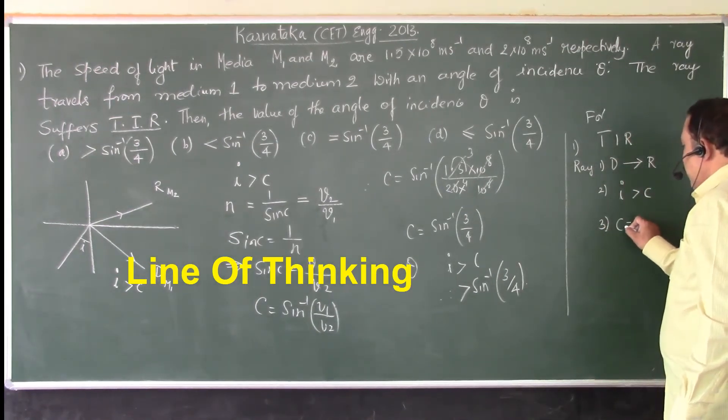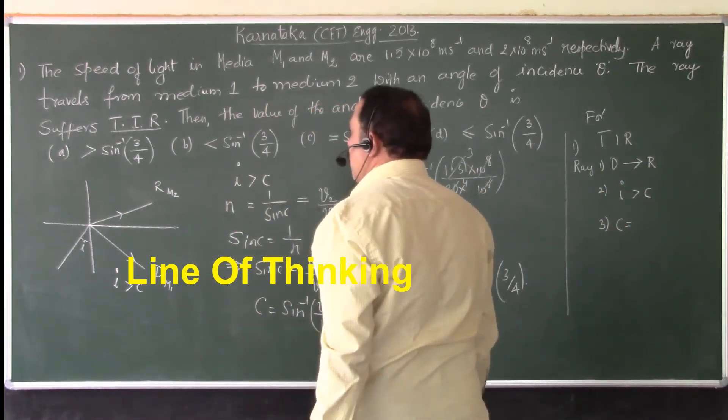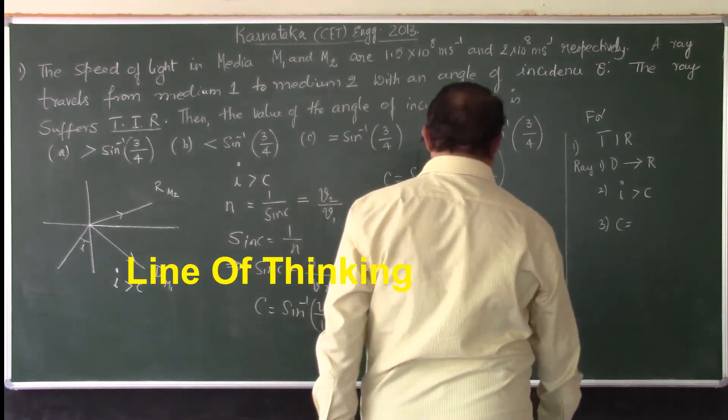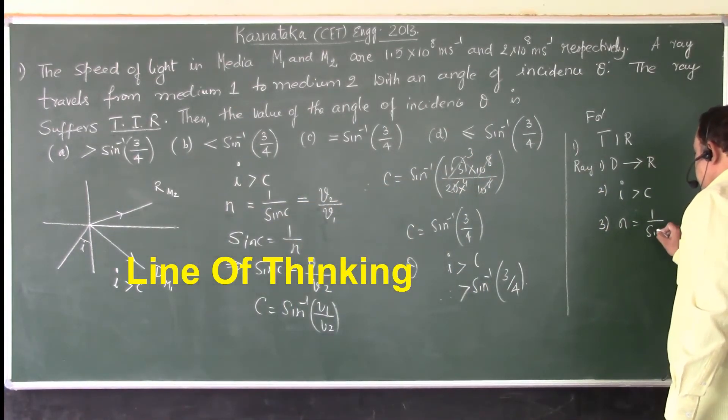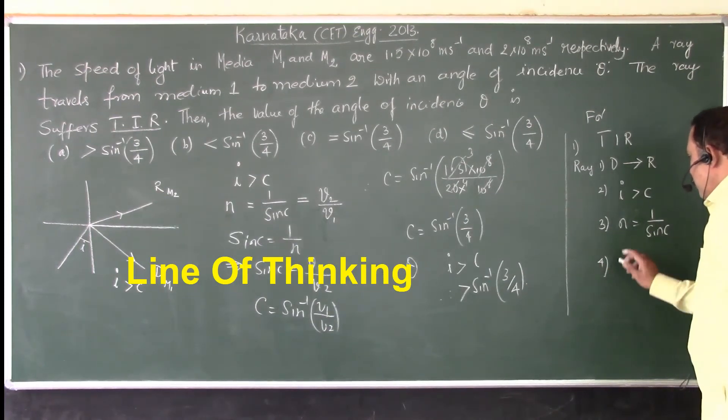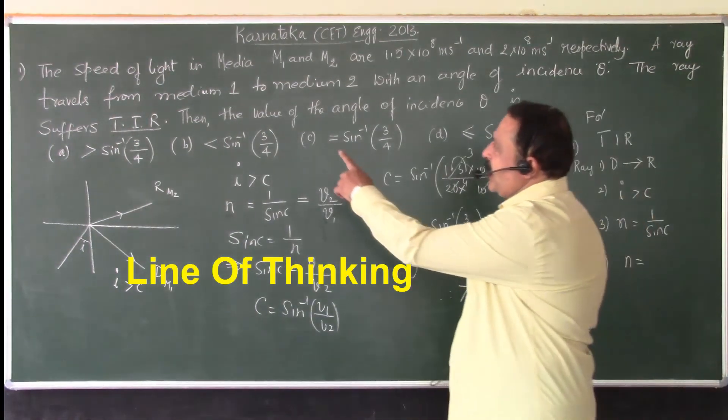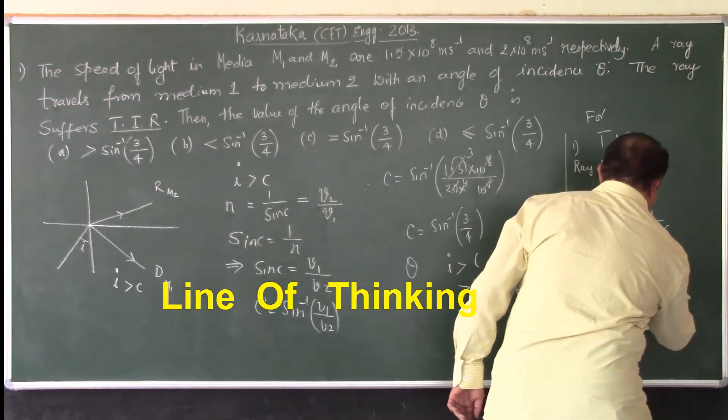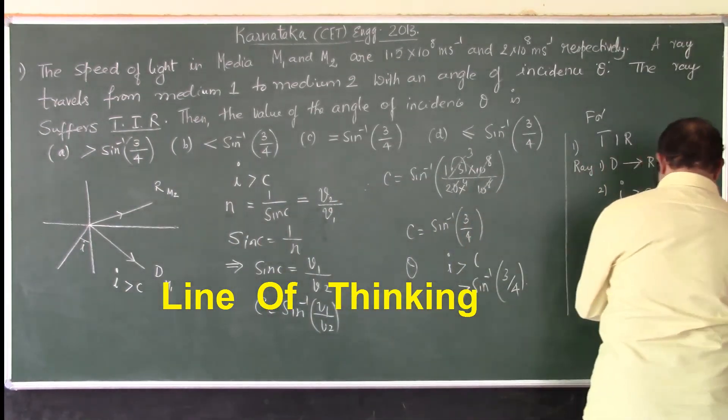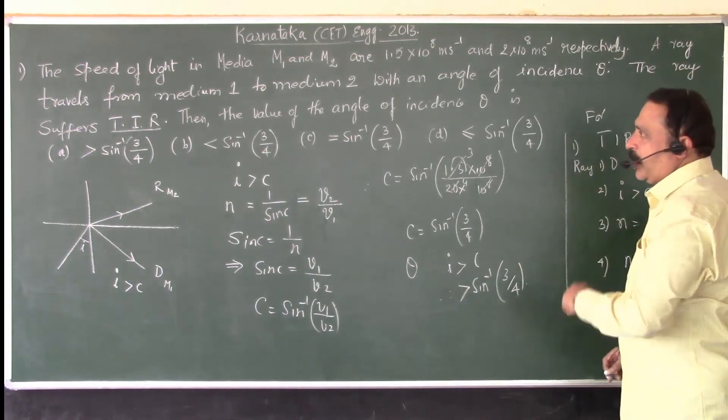Point number 3 is, critical angle of the pair of media and refractive index are related as n is equal to 1 by sin C. And point number 4, this refractive index of a pair of media can be expressed in terms of velocity of light in 2 media, which is V2 by V1. That is, velocity of light in medium 2 over velocity of light in medium 1. So, these are the thinking process for this particular problem.